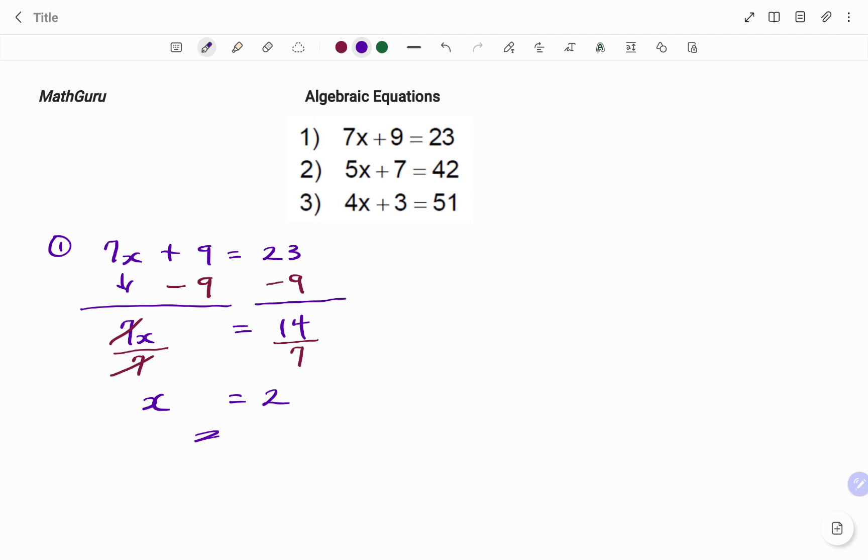In the second example, I have 5x plus 7 equals 42. Using additive inverse, I need to take out my plus 7, and the additive inverse will be minus 7, so taking out 7 from both sides. Always remember that when you're solving algebraic equations, whatever you do on your left, you do on your right.